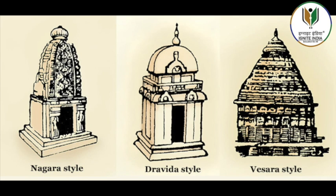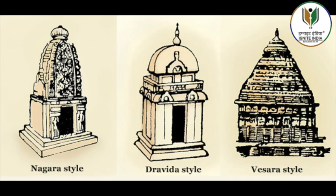It is common to find a large water reservoir or a temple tank enclosed within the complex. Subsidiary shrines are either incorporated within the main temple tower or located as distinct, separate small shrines beside the main temple.